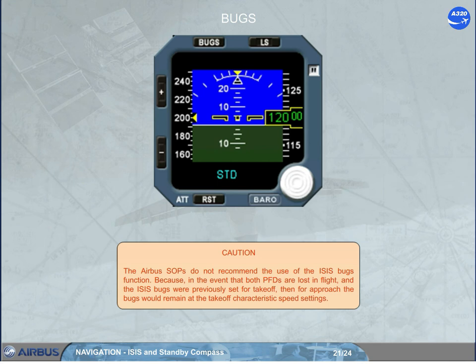The Airbus SOPs do not recommend the use of the ISIS BUGS function, because in the event that both PFDs are lost in flight and the ISIS bugs were previously set for takeoff, then for approach the bugs would remain at the takeoff characteristic speed settings.